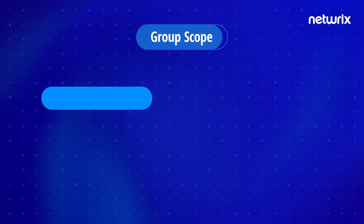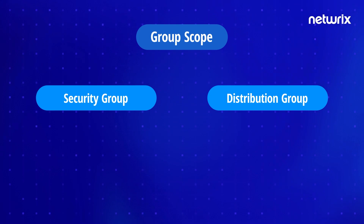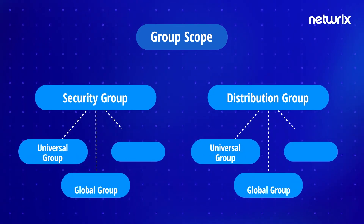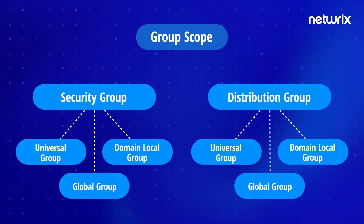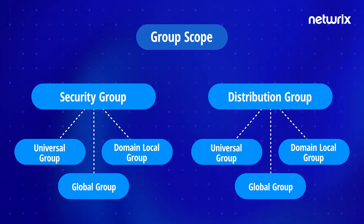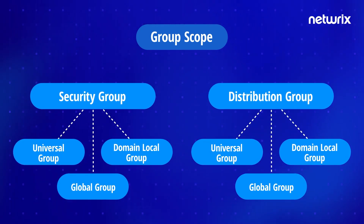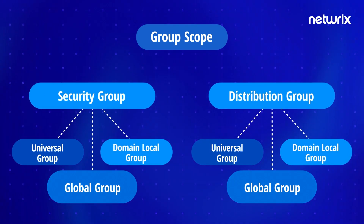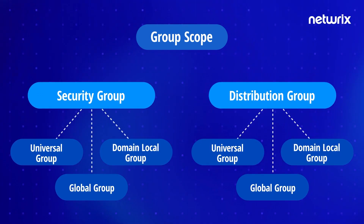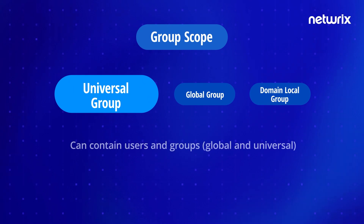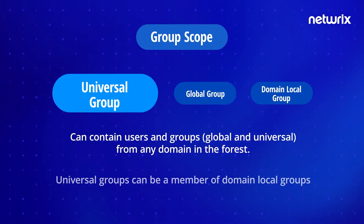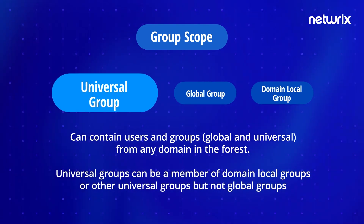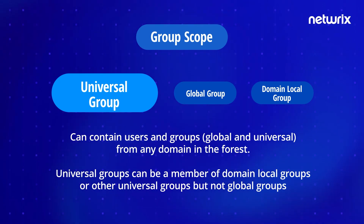When setting up a security or distribution group, you will also need to choose a scope so Active Directory knows how to assign permissions to the resources that group is allowed to access. There are three group scopes: universal, global, and domain local. A universal group can contain users and groups — both global and universal — from any domain in the forest. Universal groups can be a member of domain local groups or other universal groups, but not global groups.